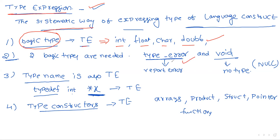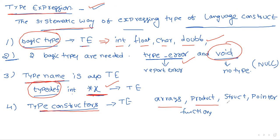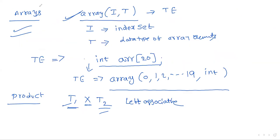The type expressions include: basic types such as int, float, char, double, etc. For type checking, two additional basic types are needed: type error, to store any error that occurs, and void, meaning the statement does not contain any type. Type name — created using typedef — is also a type expression. The different type constructors are arrays, products, structures, pointers, and functions.